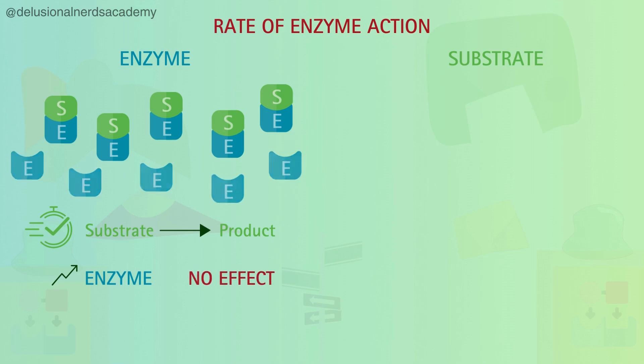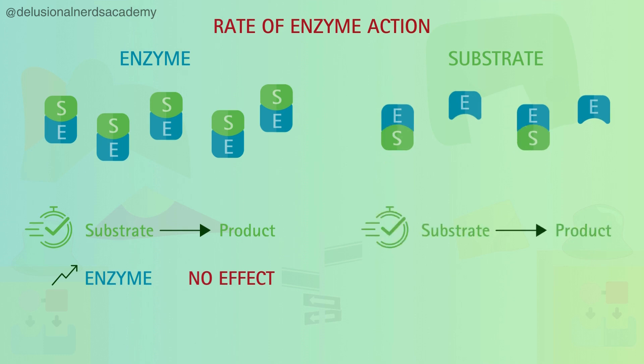Now, what if we raise the amount of substrates present by keeping the number of enzymes constant? Well, it will enhance the rate of the reaction, but just until a specific point. And after that, all the active sites get occupied and there will be none left for the substrate to bind with. In simple words, further increasing the substrate concentration will not affect the rate of the reaction.